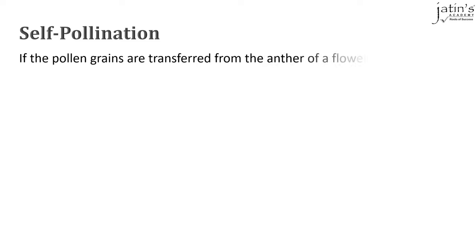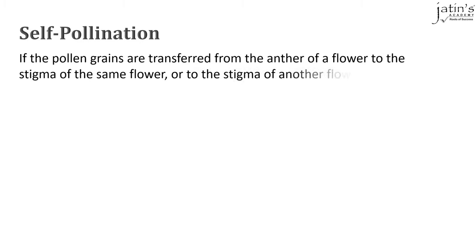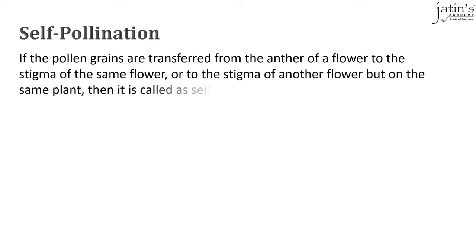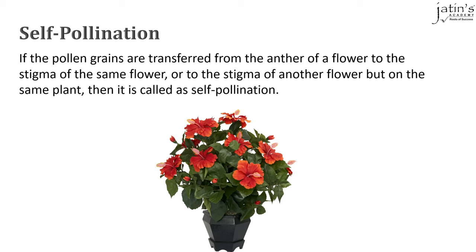Self-pollination occurs when the pollen grains are transferred from the anther of a flower to the stigma of the same flower, or to the stigma of another flower but on the same plant. For example, a bee visits a flower on a potted plant, and while drinking nectar the pollen grains stick to its legs and wings. It may come back to the same flower and transfer the pollen grains to its stigma, or fly to another flower on the same plant and transfer the pollen grain to that flower's stigma.